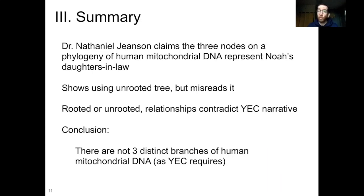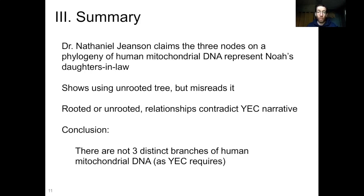To summarize: Dr. Nathaniel Jeanssen claims the three nodes on an unrooted phylogeny of human mitochondrial DNA represent Noah's daughters-in-law, but he misreads the tree, not realizing that the way it is shown represents ancestor-descendant relationships. Rooted or unrooted, the relationships contradict the Young Earth narrative. The conclusion is that there are not three distinct branches of human mitochondrial DNA as the YEC narrative requires. Instead, as with all DNA and all lineages, there are ancestor-descendant relationships and a nested hierarchical pattern, which is exactly what you would expect based on evolutionary theory.